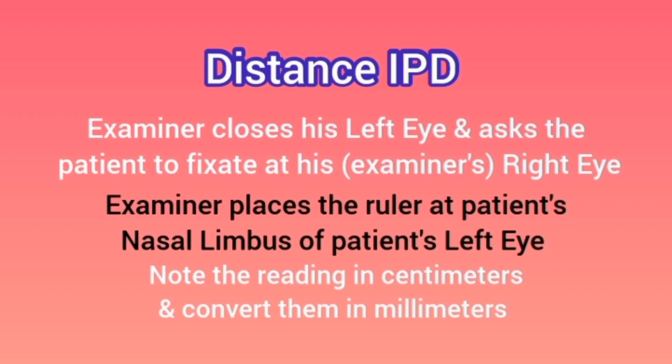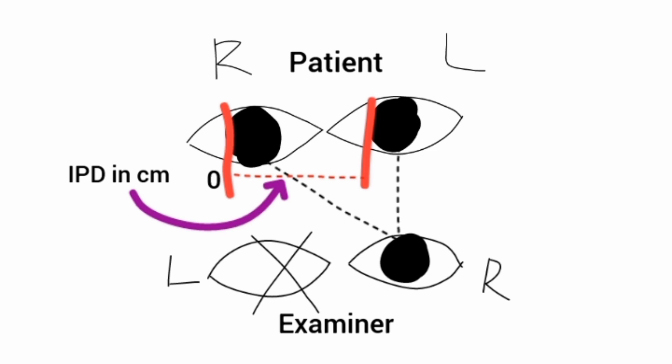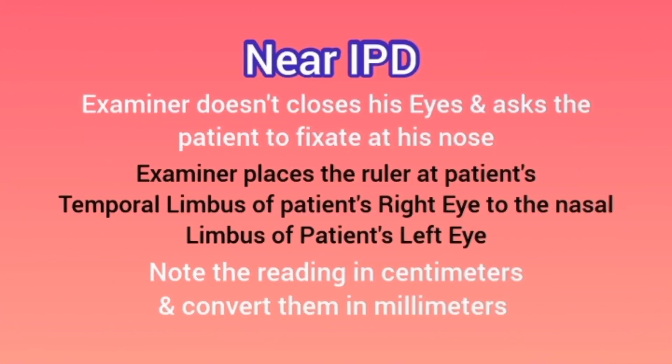Next, the examiner closes the left eye and asks the patient to fixate on the examiner's right eye. The ruler is then placed at the nasal limbus of the patient's left eye. The reading is taken from the temporal limbus to the nasal limbus of the left eye. This reading is the IPD in centimeters, which should then be converted into millimeters.